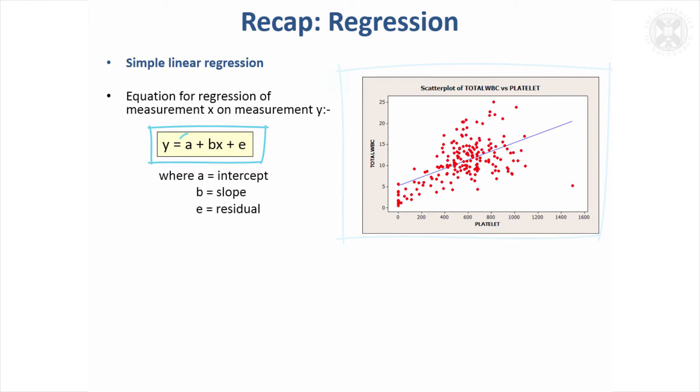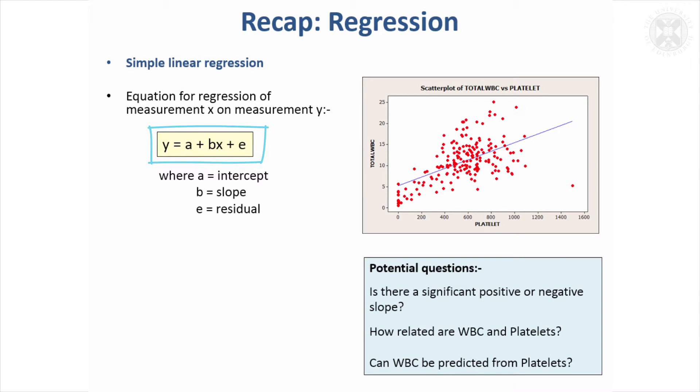We have an intercept value, a constant, plus a slope. This b represents how steep that slope is. X here would be the platelets, and an error term.